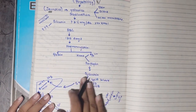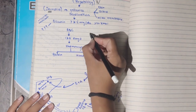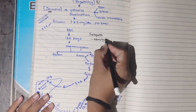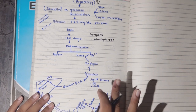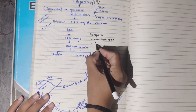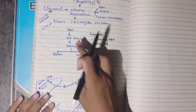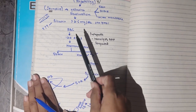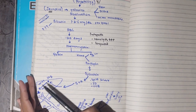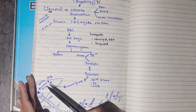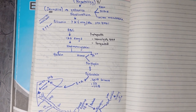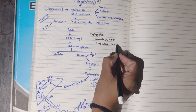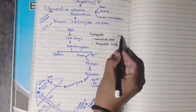In pre-hepatic causes, the main reason is excessive haemolysis — excessive RBC breakdown. This raises unconjugated bilirubin. A second pre-hepatic cause is a non-haemolytic congenital defect affecting the conjugation enzyme UGT1A1. When this enzyme is deficient, unconjugated bilirubin accumulates. We call these conditions Gilbert syndrome and Crigler-Najjar syndrome — congenital non-haemolytic hyperbilirubinaemia with raised unconjugated bilirubin.